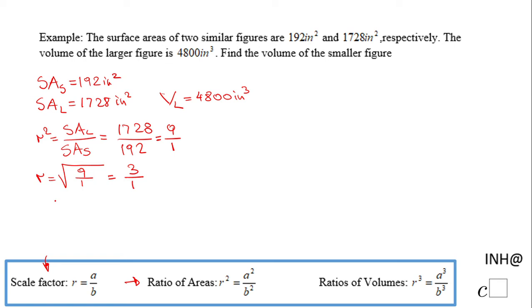But we don't need the scale factor for these two similar figures. We need the ratio of the volumes, which is r cubed. You notice here how the r cubed looks like: I'm going to have 3 to the third power over 1 to the third power. Raise to the third power each part of the fraction, and in this case this will be 27 over 1.